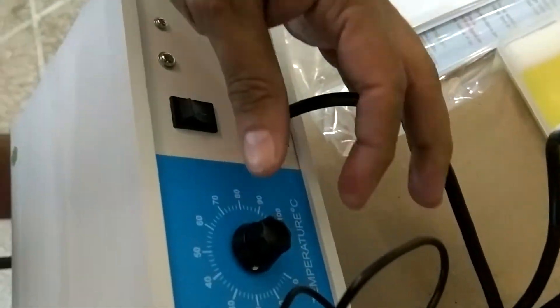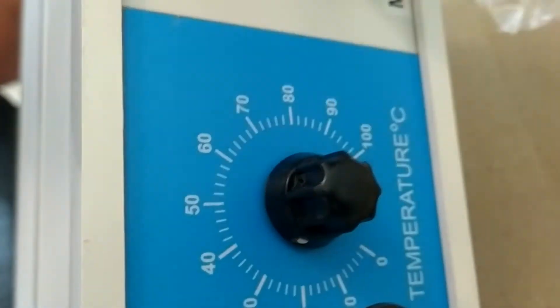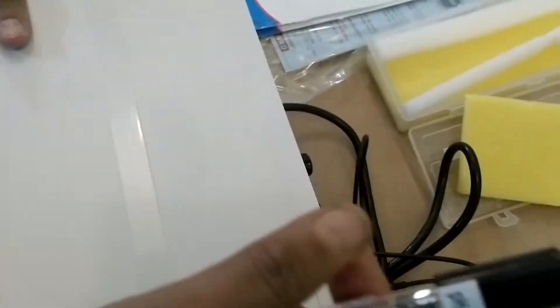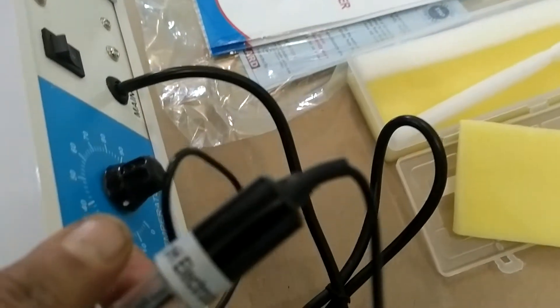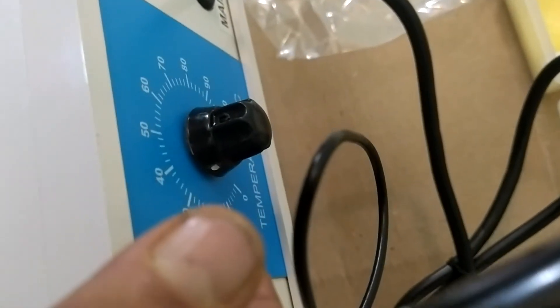And set your temperature. I am setting 25 degree standard pH temperature. You can adjust on your convenience. That's what is your ambient temperature: that is 20, 25, 30, 40. This is the switch on switch, on off like this.